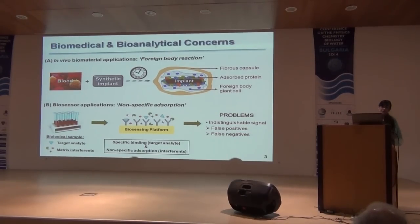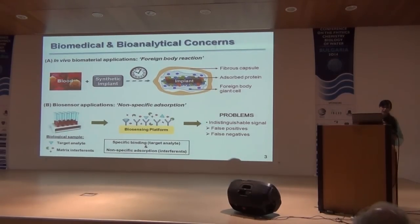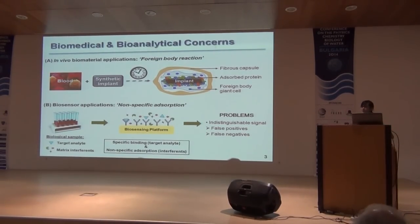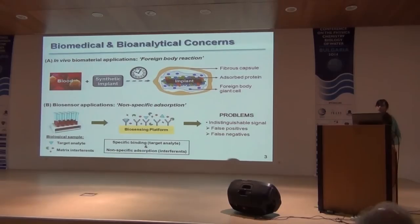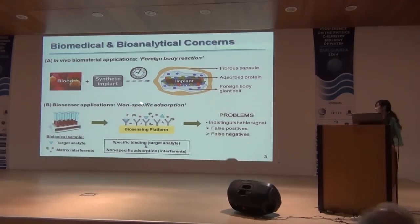With respect to biosensing applications, I look at non-specific adsorption. Here you have your biological sample where your target analyte is present at very low concentrations — as low as nanograms per liter — and then you have matrix interference from all the other species present in blood, which are at 60 to 80 grams per liter. When you expose your biological sample to your biosensing platform, everything starts to interact with the platform, giving indistinguishable signal and leading to false positives and false negatives.